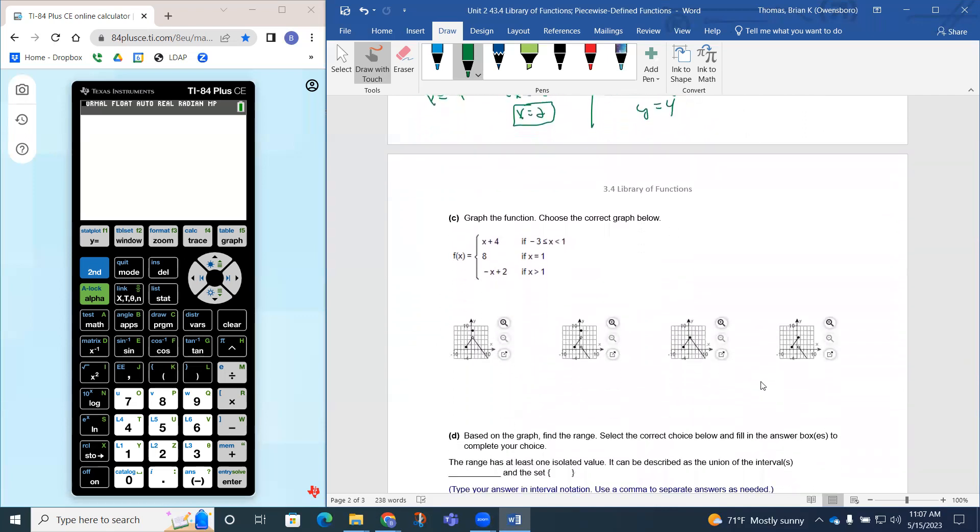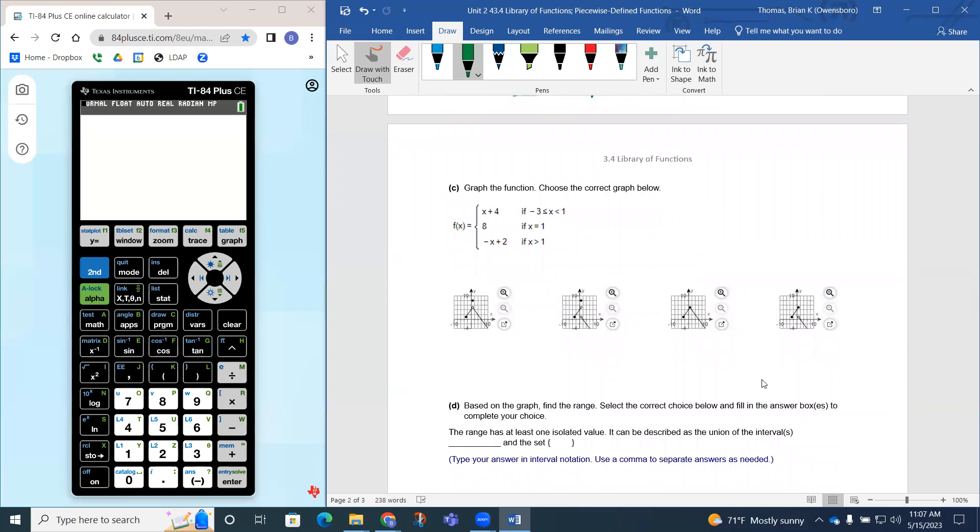Part c says graph the function. So the first function, x plus 4, is a line. But all we can do is graph the part that's from negative 3 to 1. So what I can do is identify those two endpoints. When x is negative 3, you're going to get negative 3 plus 4 would be 1. So when x is negative 3, you had 1 for the y value. And since negative 3 is part of the domain, we're going to see that. So negative 3, 1, this looks pretty good here.